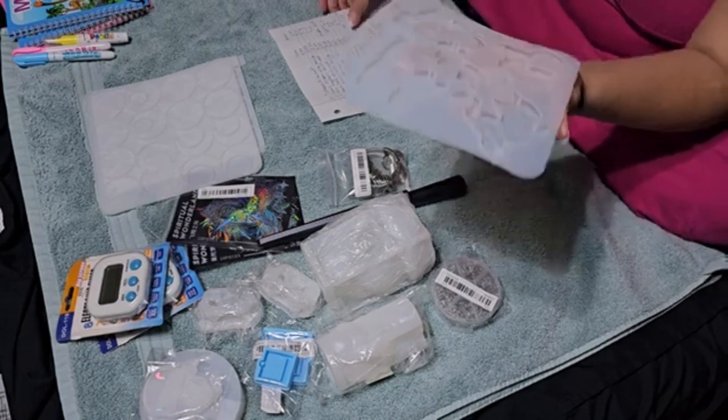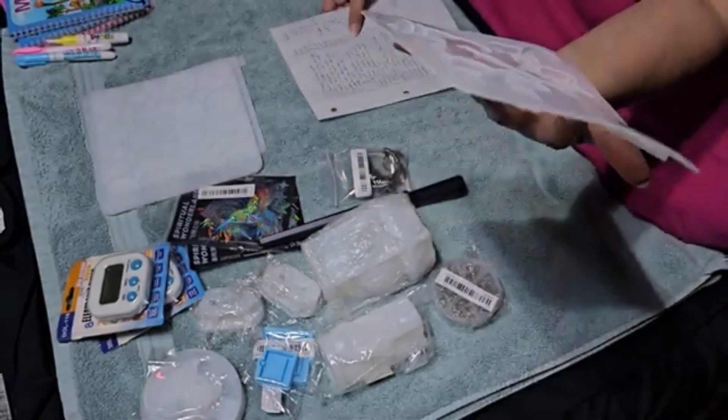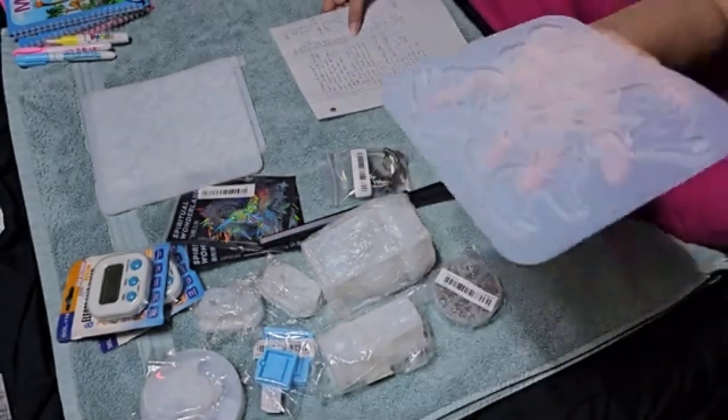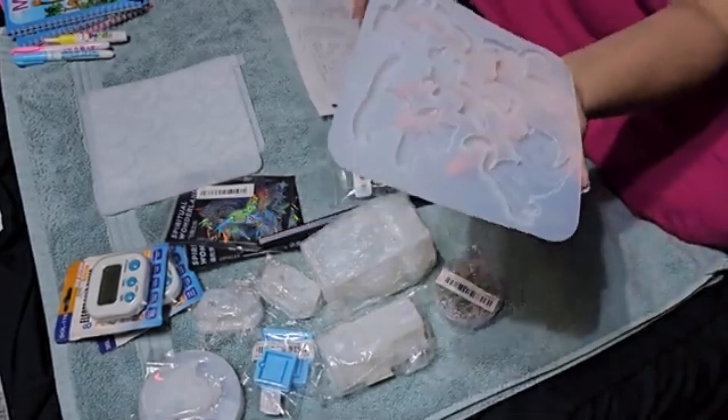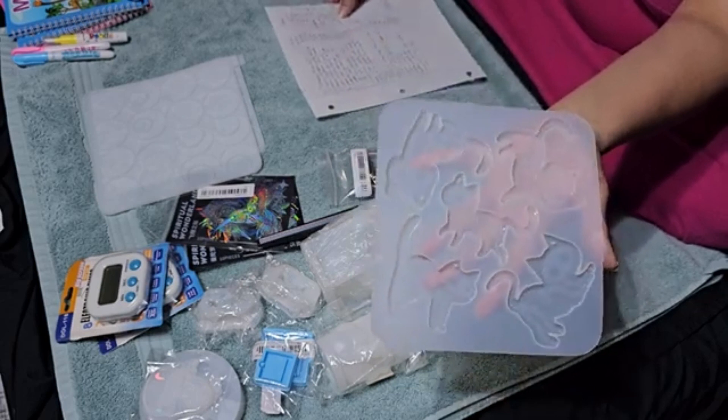And this is, they call it an embossed cat mold, but it looks like little skeleton cats. And it's a key ring mold. And this was $2.97 on Temu and $8.99 on Amazon.